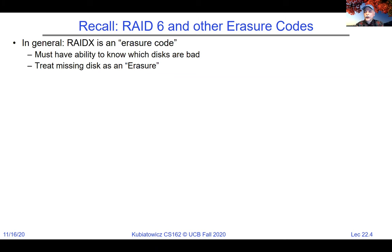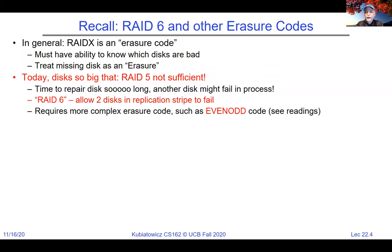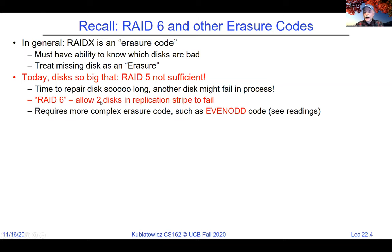RAID 5, which is what you learned about in 61C, is really not sufficient today because it can only recover from one failed disk. Disks are so big now that while you are busy recovering that disk by putting a new one in, it might fail again, and at that point you just lose all your data. So if you ever have a big file system on a big file server, make sure you pick at least RAID 6, which handles two failed disks. Even-odd is a code that works for two disks.